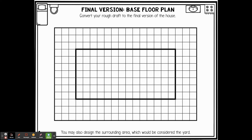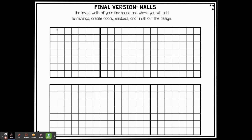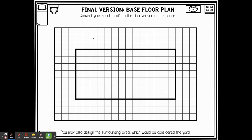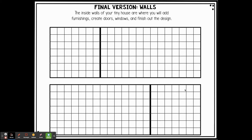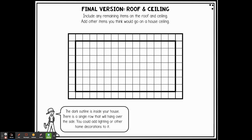Just like the rough draft or the blueprint, these pages can all be printed at home, or use your own paper if you do not have access to a printer. This one is the base. The solid bold outline of a rectangle — that's your house. Everything around it, from this point, is like your yard or where your porch would be. These are the two walls, and you have to pay attention to which wall is on what side. And then this is your ceiling and roof. The dark outline is inside your house. There is a single row that will hang over the side — you could add lighting or other home decorations to it.